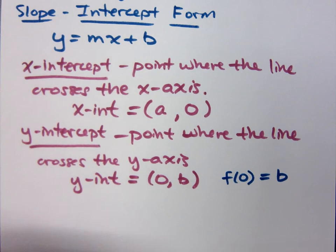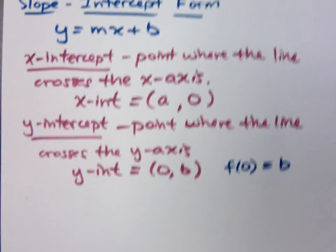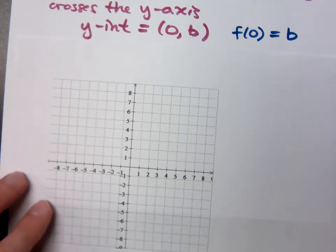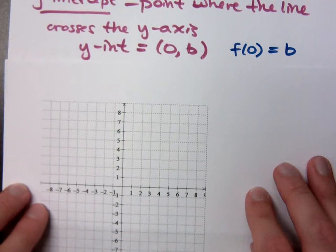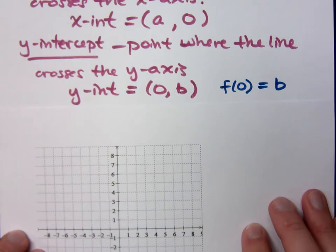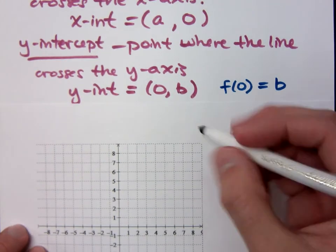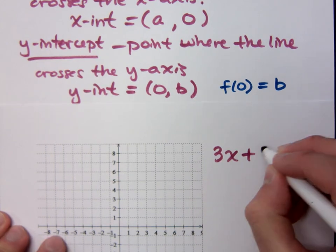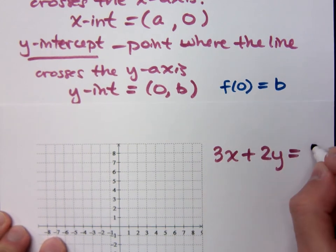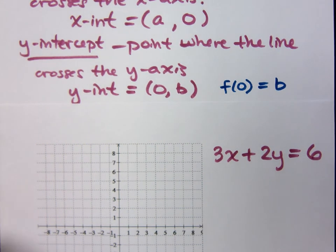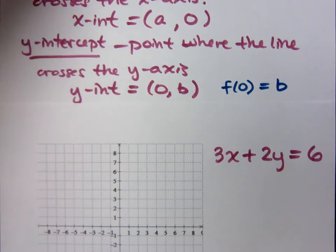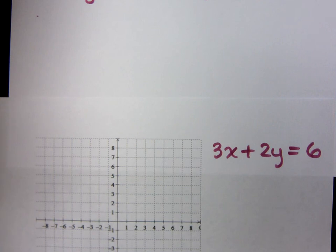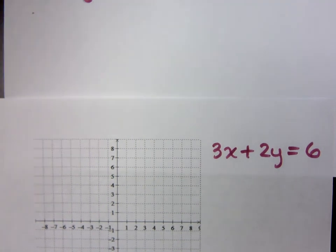Let's look at dealing with the X and Y-intercepts, especially when you have something like this. Let me do this on another page. If I were to take 3X plus 2Y is equal to 6 and I want to find the X and Y-intercept.